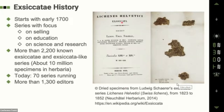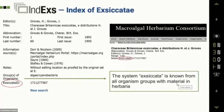Exsiccatae history begins in the early 1700s. Initially published in book or booklet forms with specimens glued together with their labels, they were first used in sales and education and later in science and research — particularly for taxonomic studies, as new species descriptions were sometimes included in the label. Today more than 2,200 exsiccatae and exsiccatae-like series are known, representing about 10 million specimens. More than 70 series are currently running and more than 1,300 editors are known.